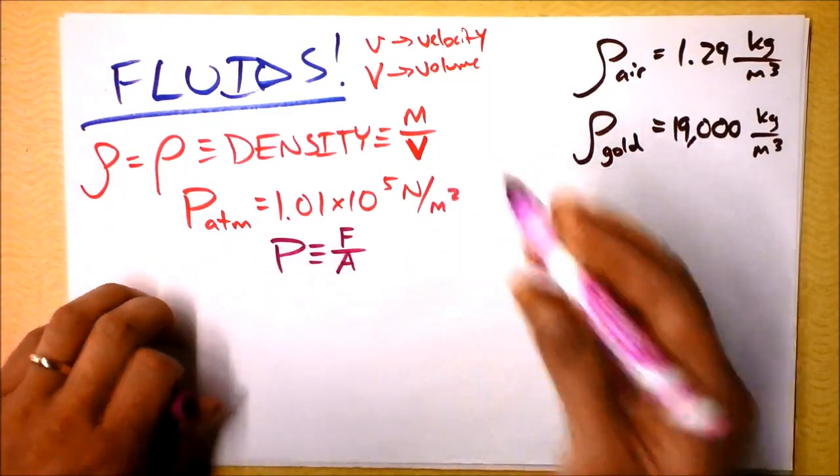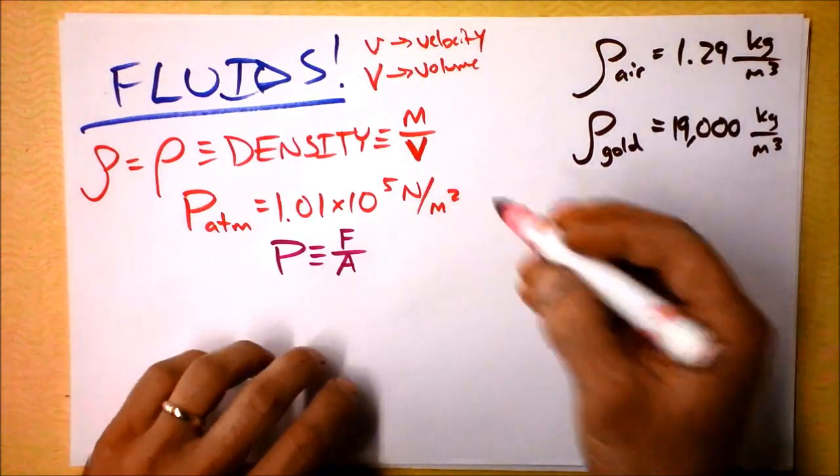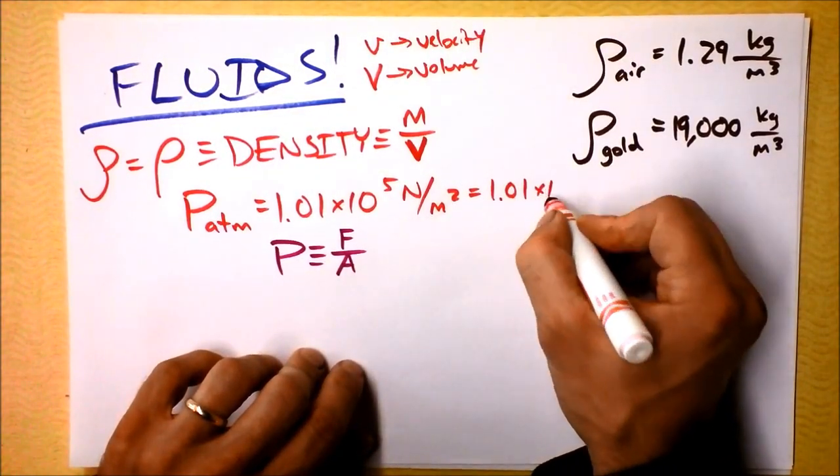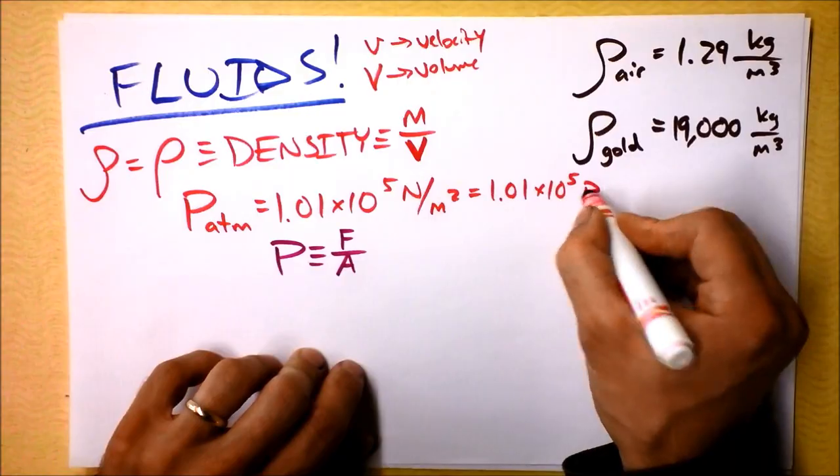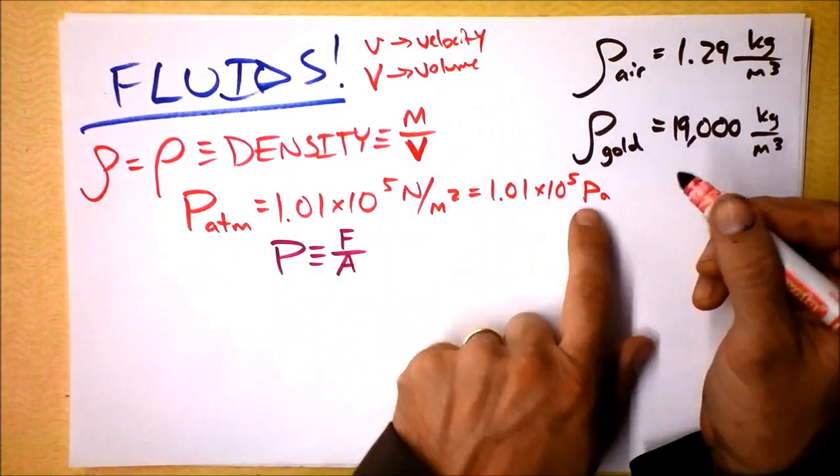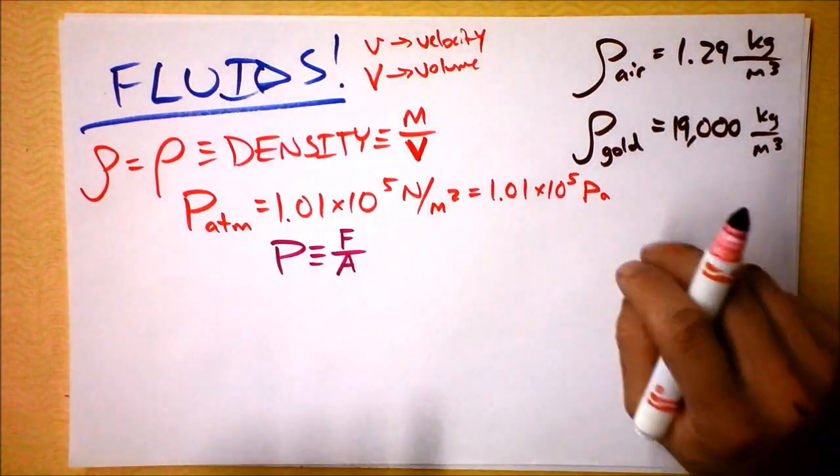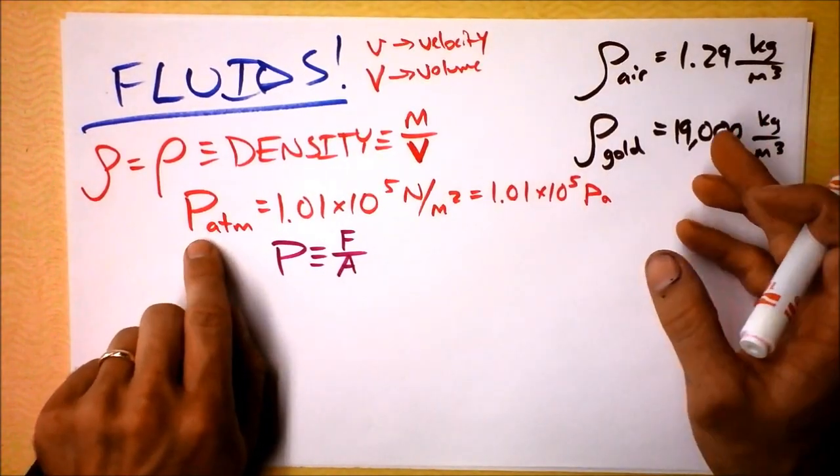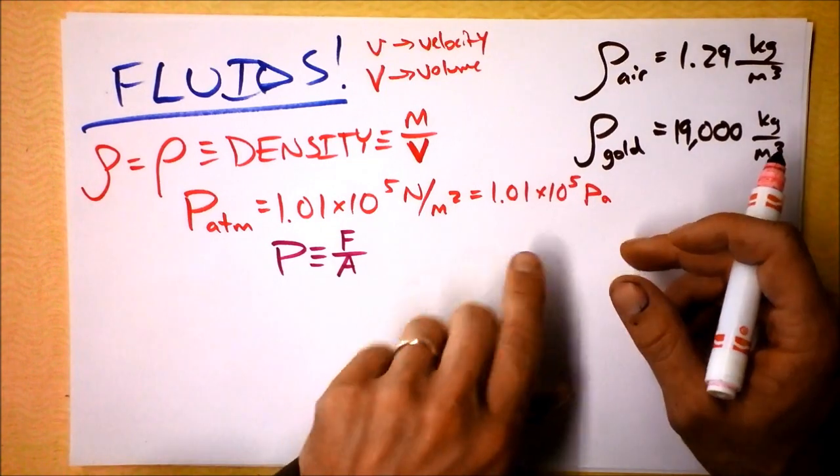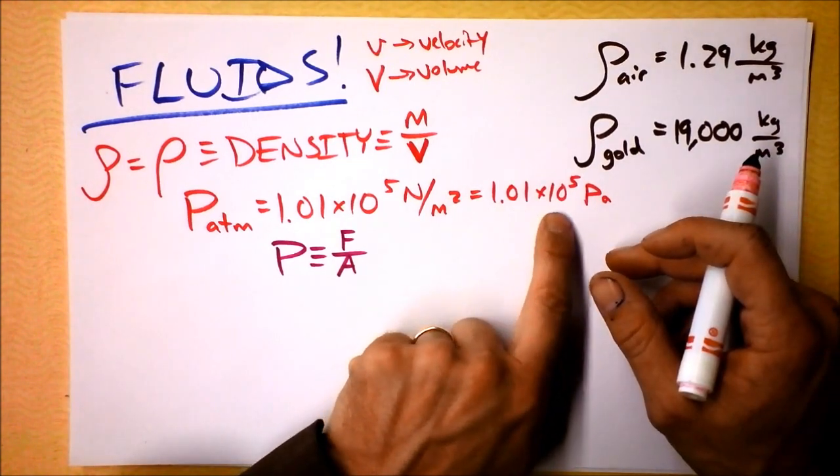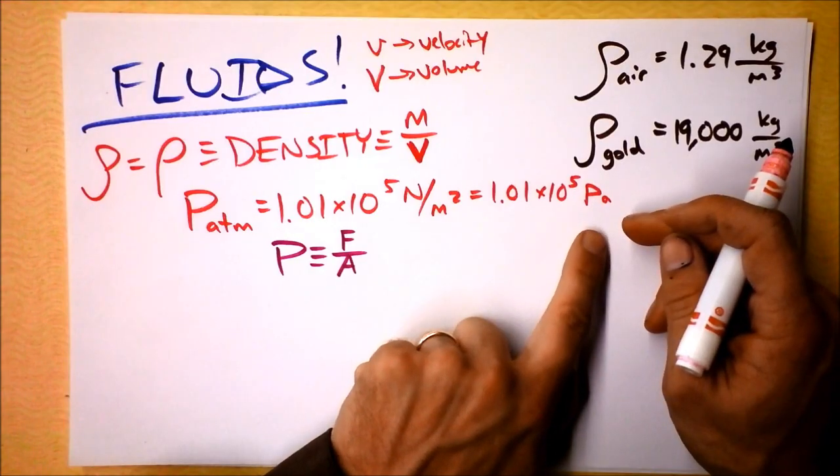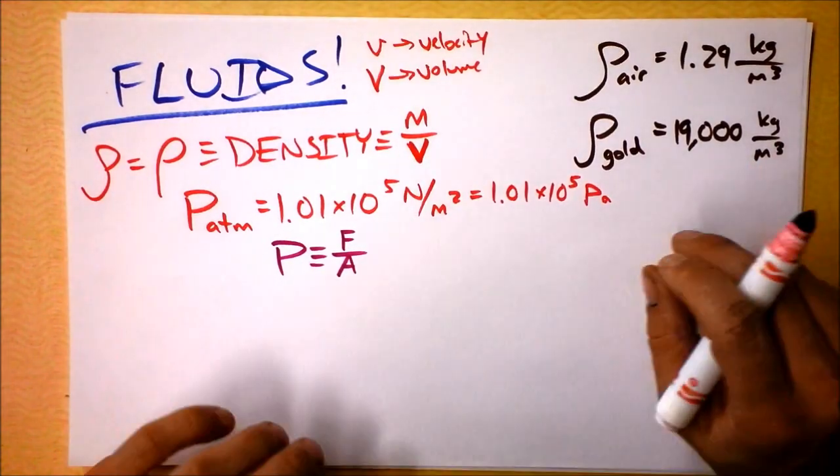So if we continue, I could say that this is 1.01 times 10 to the fifth pascals. That's the SI unit for pressure. And it's a super tiny unit. You notice that our atmosphere, which is not particularly squeezed. In my experience, it doesn't feel very squeezy, right? But it's 1.01 times 10 to the fifth pascals. 100,000 pascals in our little atmosphere.